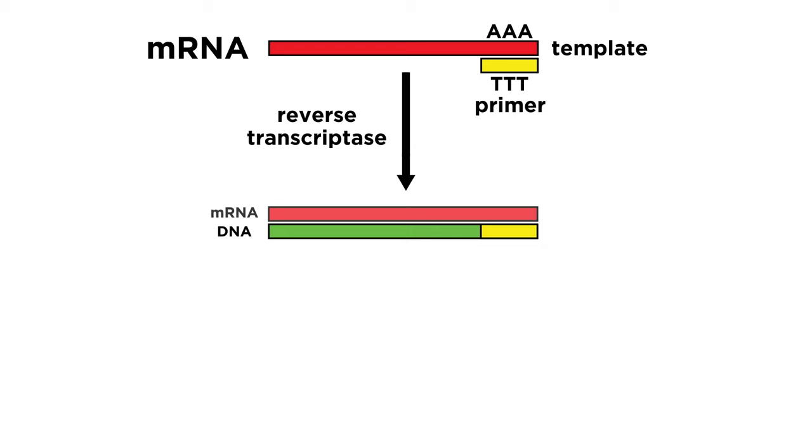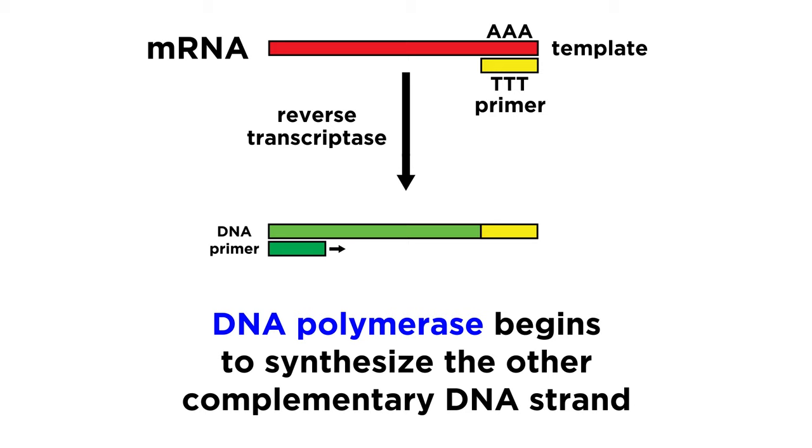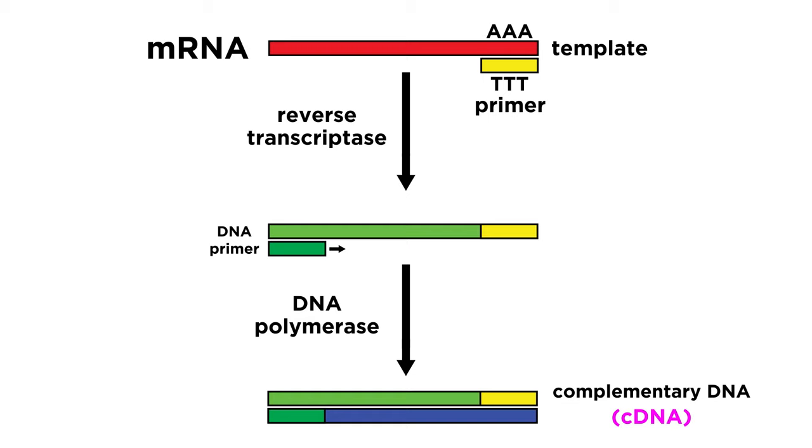Once completed, another enzyme is used to degrade the mRNA, and then DNA polymerase is used to synthesize the complementary DNA strand, resulting in double-stranded DNA, which we will call complementary DNA, or cDNA.